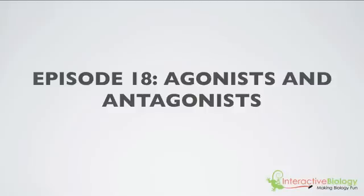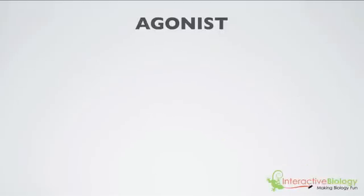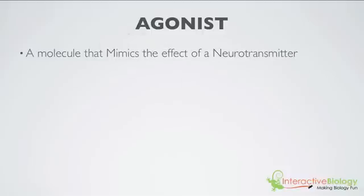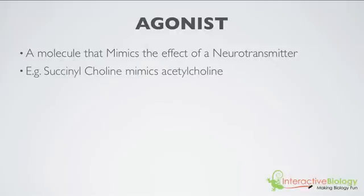It almost sounds like a plot for a movie, but it's not a movie, unless it's a movie happening inside your body. The first thing we're going to talk about is what is an agonist, and an agonist is a molecule that mimics the effect of a neurotransmitter. So it does what that neurotransmitter would normally do. An example of that would be succinylcholine, which mimics the neurotransmitter acetylcholine.